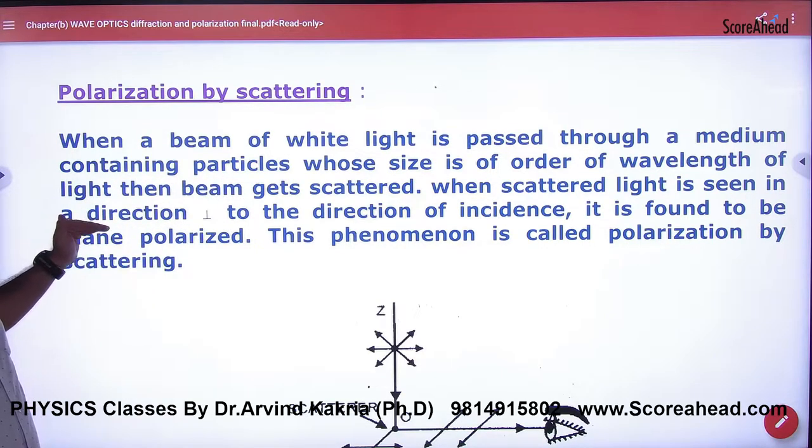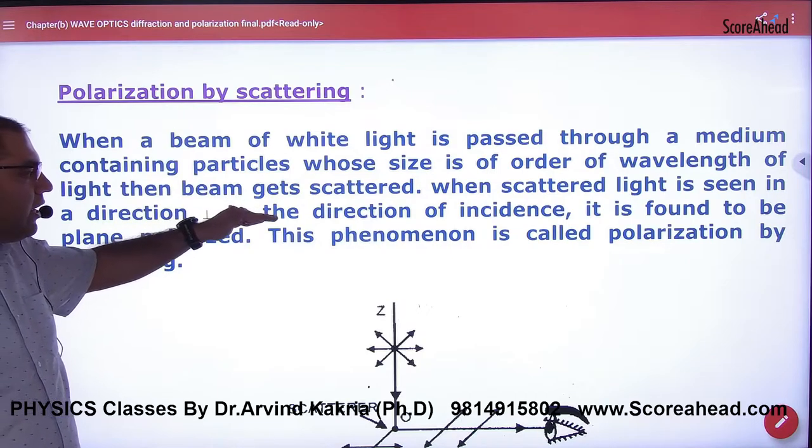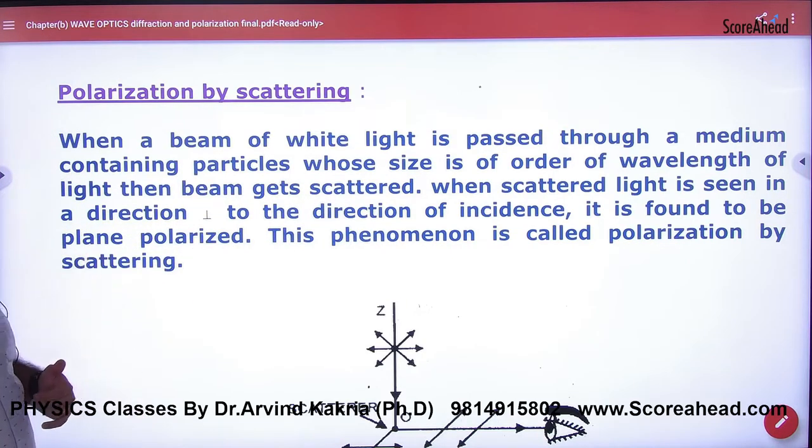When scattered light is seen in the direction perpendicular to the direction of incidence, it is found to be plane polarized. This is known as polarization by scattering. So the point is clear.